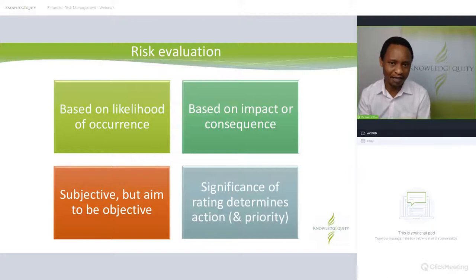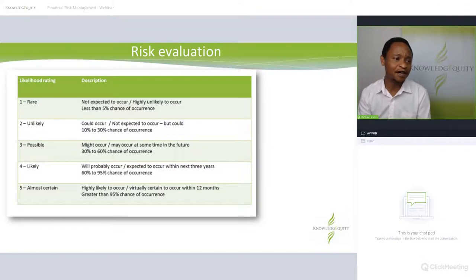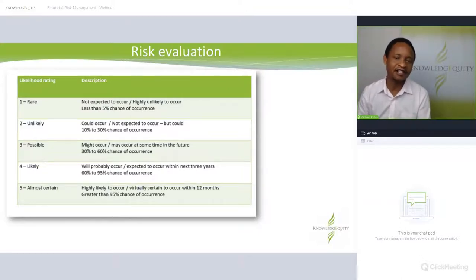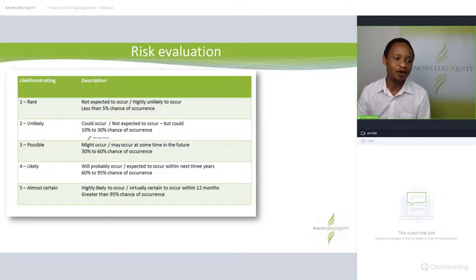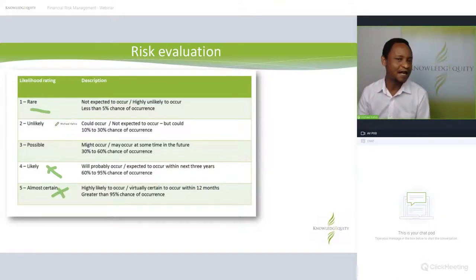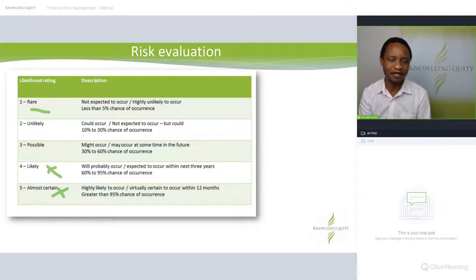This is the risk likelihood table — we have rare, unlikely, possible, likely, and almost certain. When you look at a particular risk, such as the likelihood that an organization will be impacted by cyber attacks, most organizations will rate that as likely or almost certain. It would be very unlikely to say rare, unless the organization has no digital assets and no data, which is probably not possible.